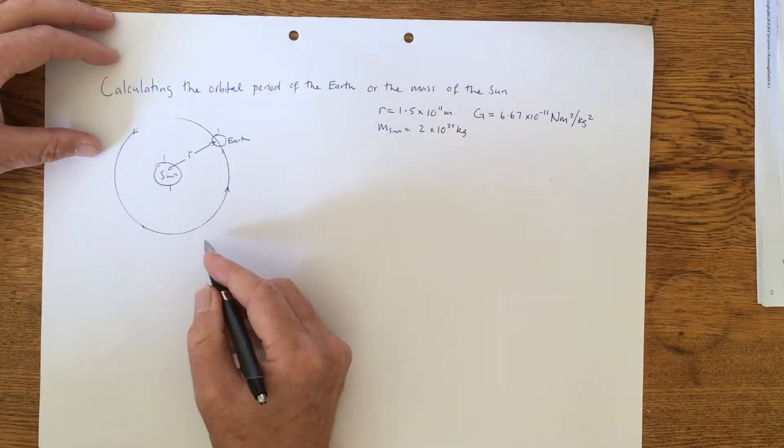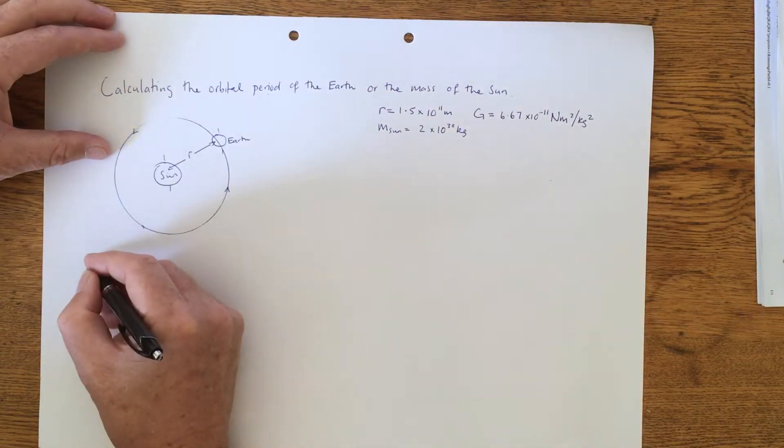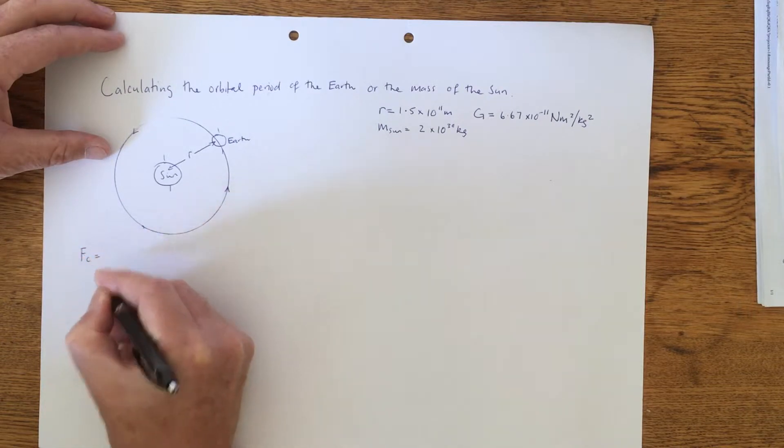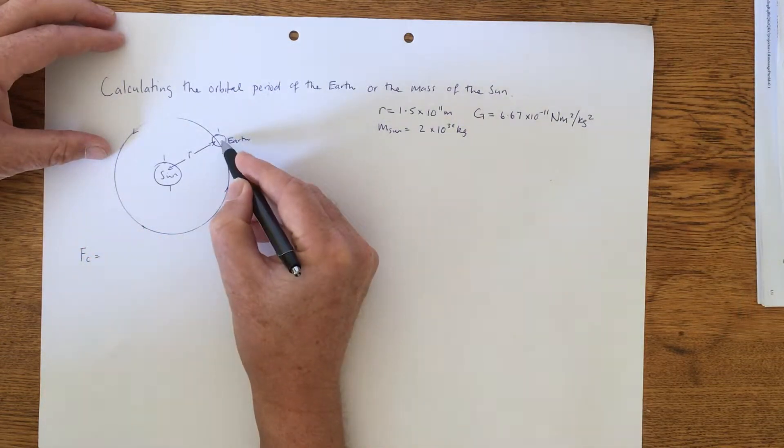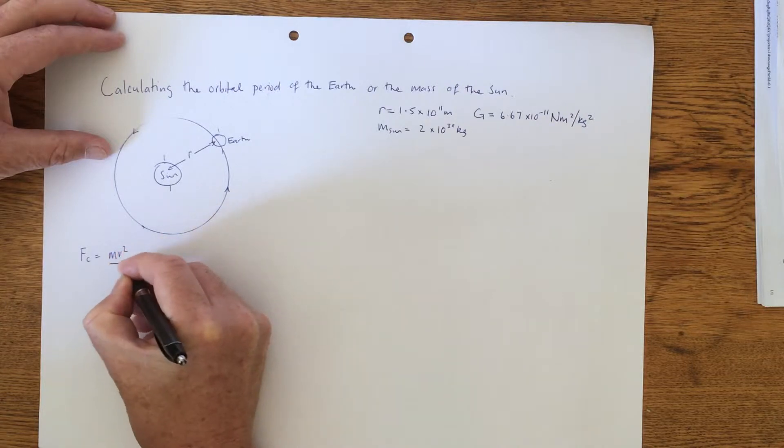So the first thing to get down is that we know that the centripetal force on the Earth is mv squared over R.